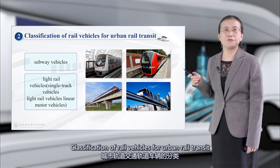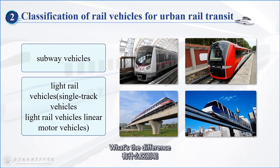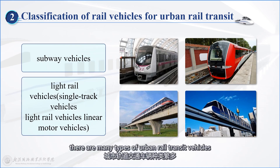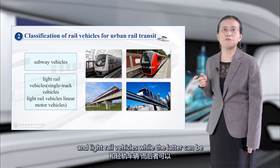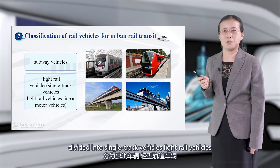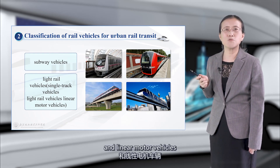Now let's look at the classification of rail vehicles for urban rail transit. With the development of subway vehicle manufacturing technology, there are many types of urban rail transit vehicles, which can be roughly divided into subway vehicles and light rail vehicles. The latter can be further divided into monorail vehicles, light rail vehicles, and linear motor vehicles.